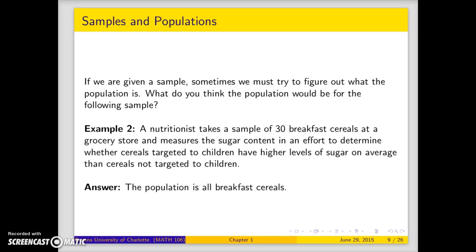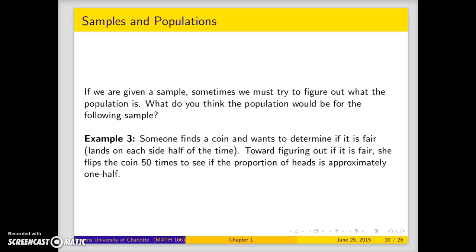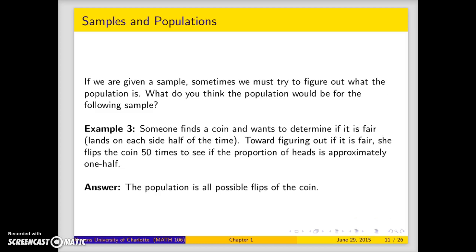The third example. Suppose you find a coin and want to know if it's a fair coin. In other words, whether you flip it, does it land on heads half the time or tails half the other time? So a person who finds a coin flips to see if the proportion of heads is about one half. Take a minute, see if you can figure out what this population is.